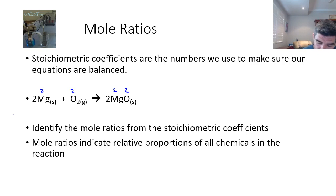The coefficients outside then become my mole ratios. Two, there isn't a number here which means it's one, and again this number here makes it two. So my mole ratios are two to one to two. So this is how I identify the mole ratios from the stoichiometric coefficients.